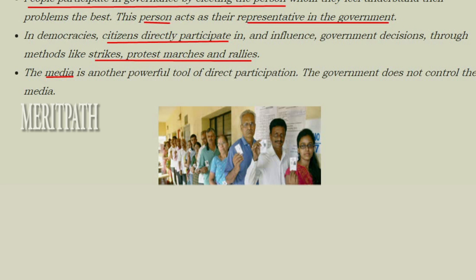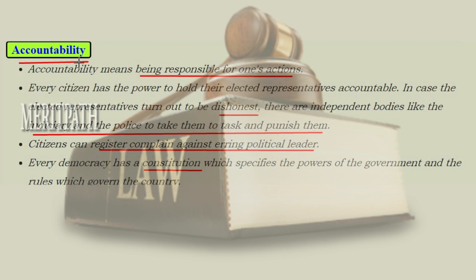The next key element of democracy is accountability. Accountability means being responsible for one's actions — whether the action is good or bad, only you are responsible for it. Similarly, the leader elected by the people in a democratic government, if doing something wrong, is solely responsible for his actions. Every citizen of the town or city has the power to hold their elected representatives accountable — they have the right to question representatives who are doing something wrong.